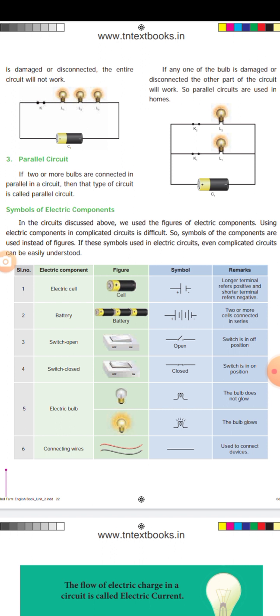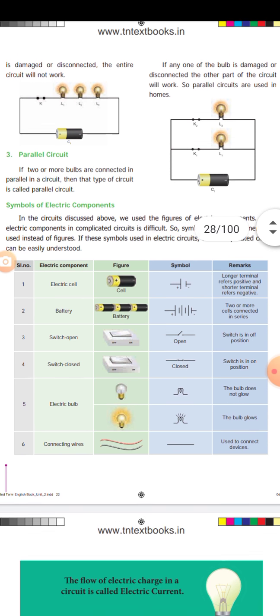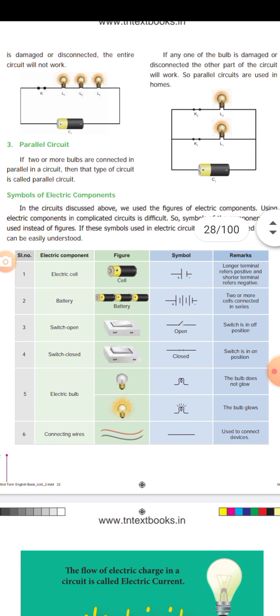Switch — open switch: circuit function. Then switch — closed switch: continuous, switch in on position. Bulb: when the switch is open, the bulb does not glow; when closed, the bulb glows.